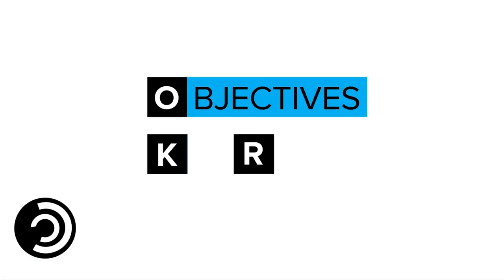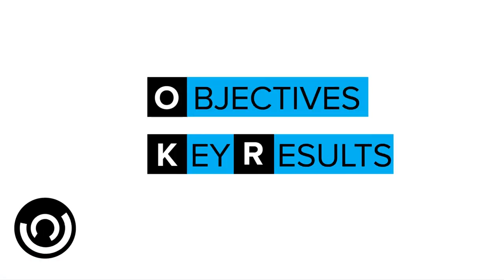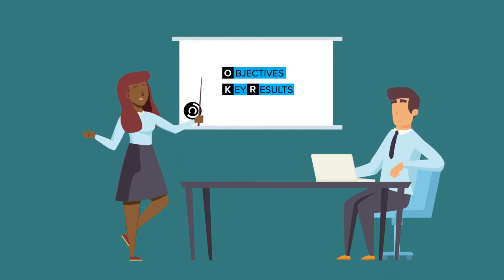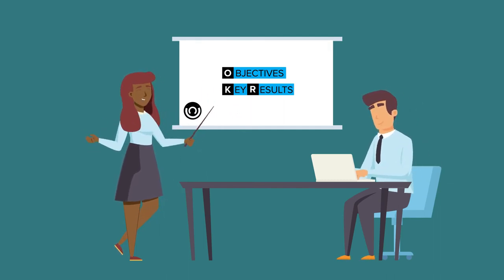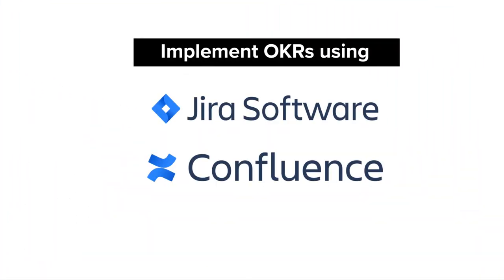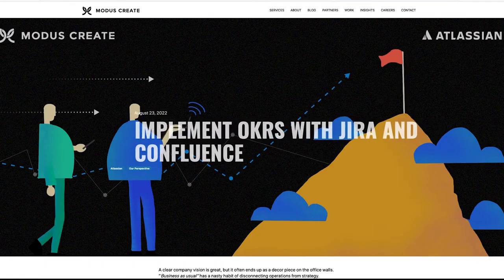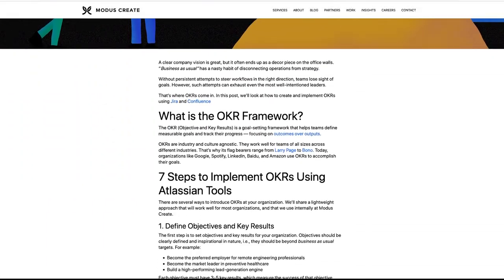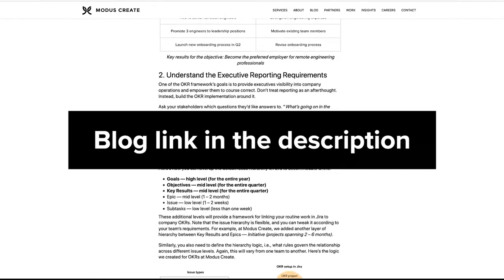OKRs, or Objective and Key Results, is arguably the most popular goal-setting framework for organizations. There are several ways to implement OKRs in your organization. In this video, we'll go over how to implement OKRs using a combination of Jira and Confluence. Be sure to check out our blog on this topic because it goes into even more details — the link is in the description below.